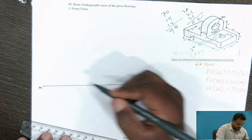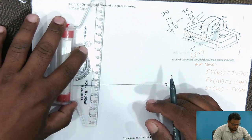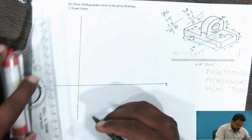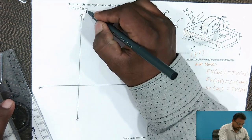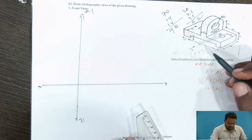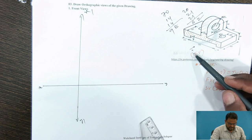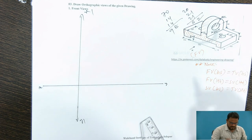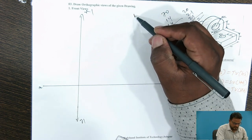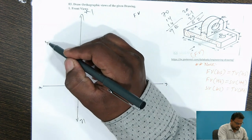This is the x-y line, and another line we are going to draw perpendicular to this one — this is x1 and y1. When we see from this side, we are interested in the left side. Our object will be visible in this direction. We are going to draw the front view here, the top view here, and the side view here.